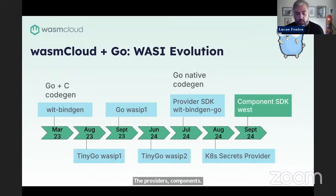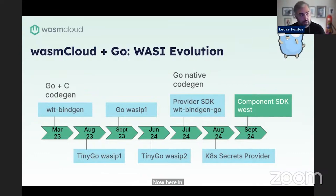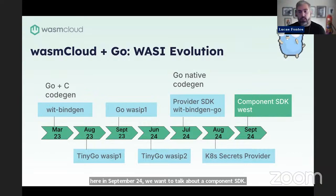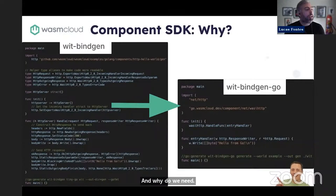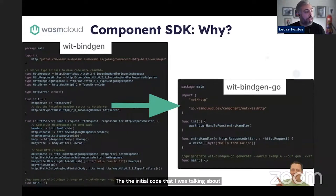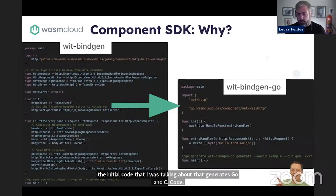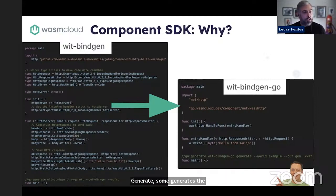Here in September 2024, we want to talk about a component SDK and also about West, which is how you test your components in Go. Why do we need an SDK? The initial code generation that generates Go and C code generates very verbose types, structs, and functions. It's calling into C APIs and is very low level.